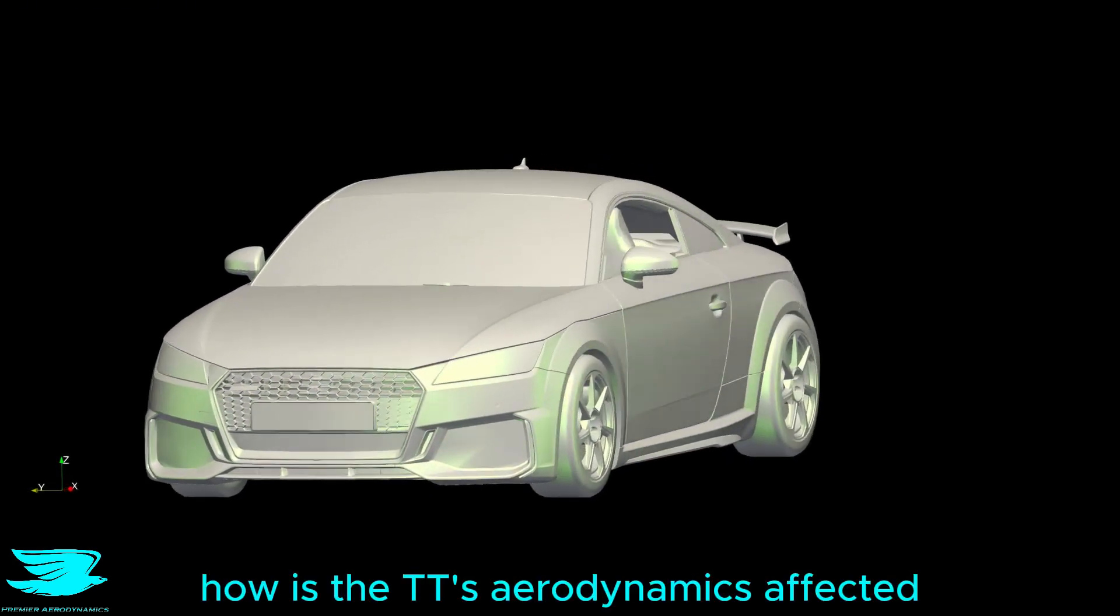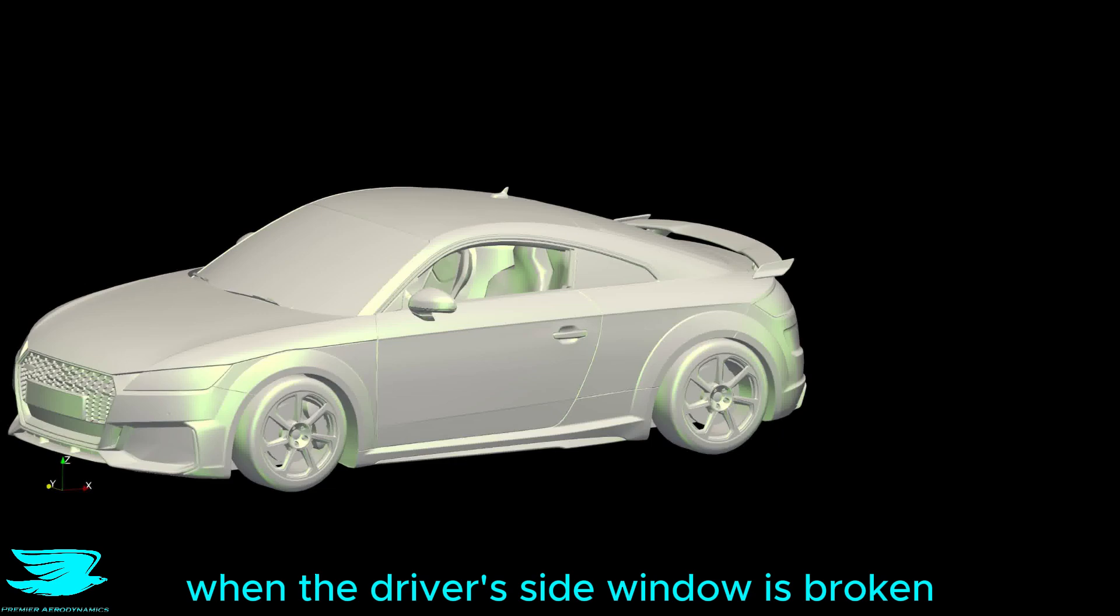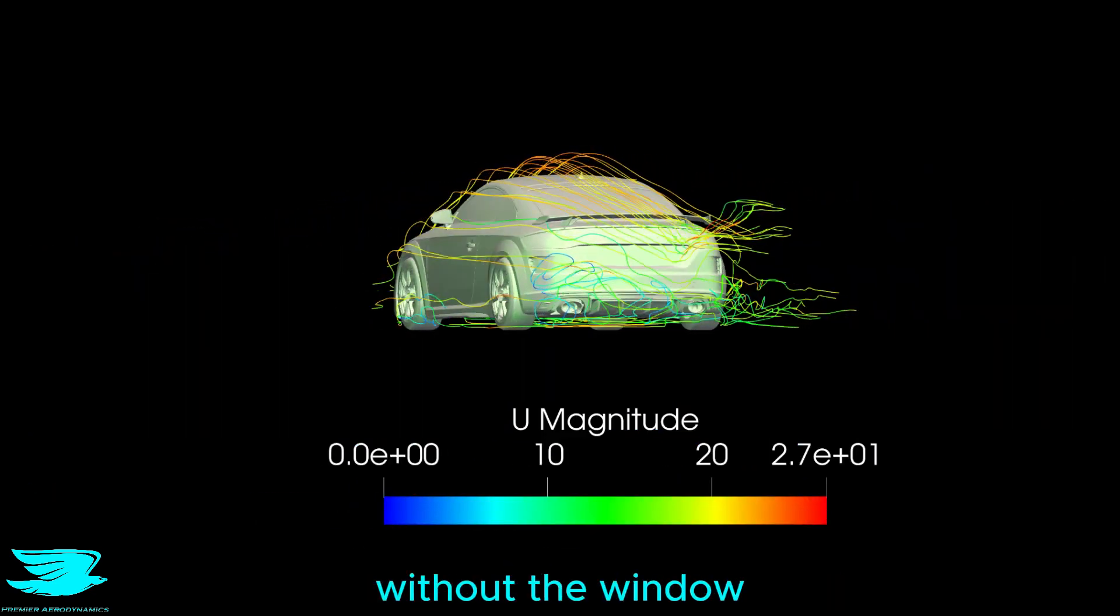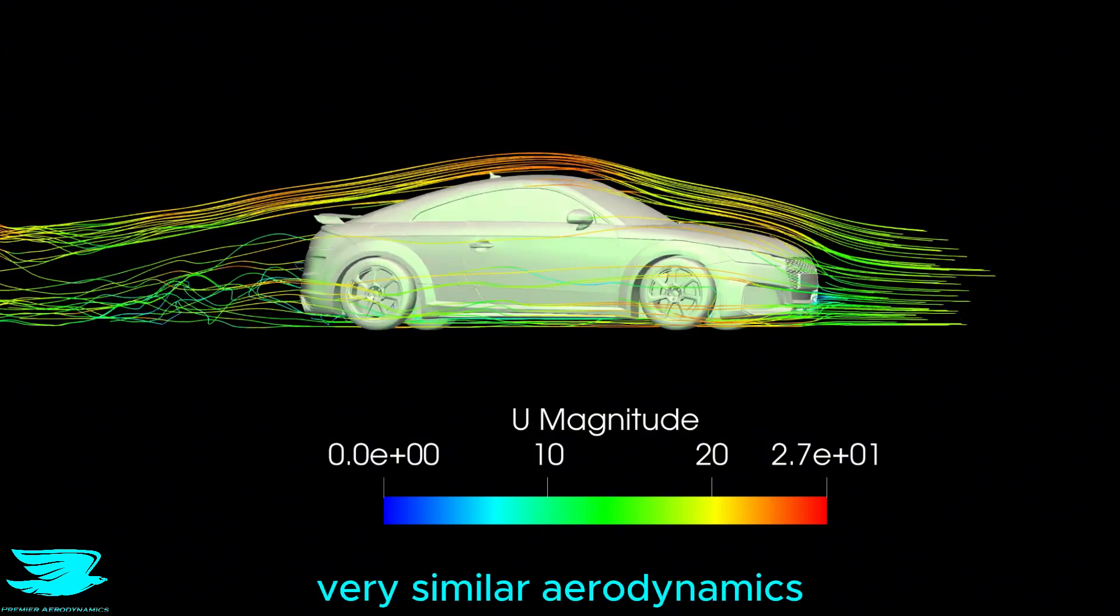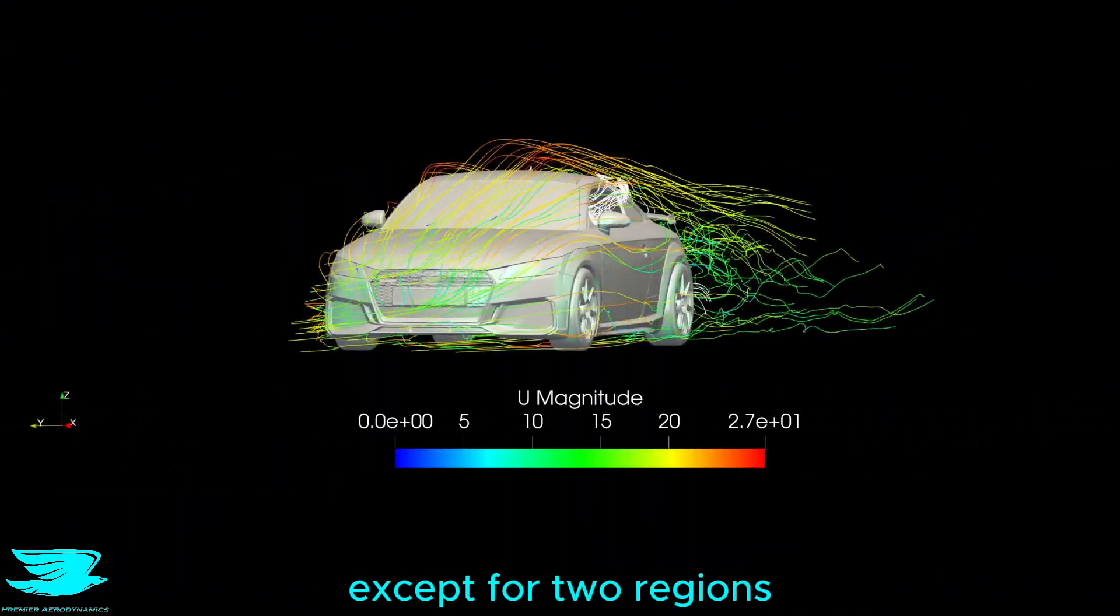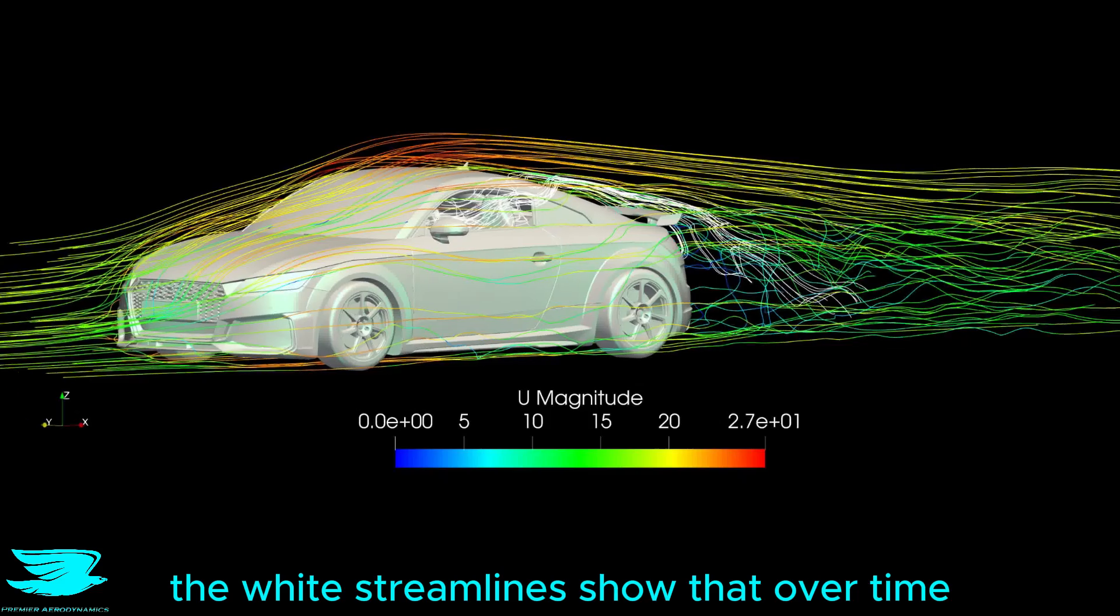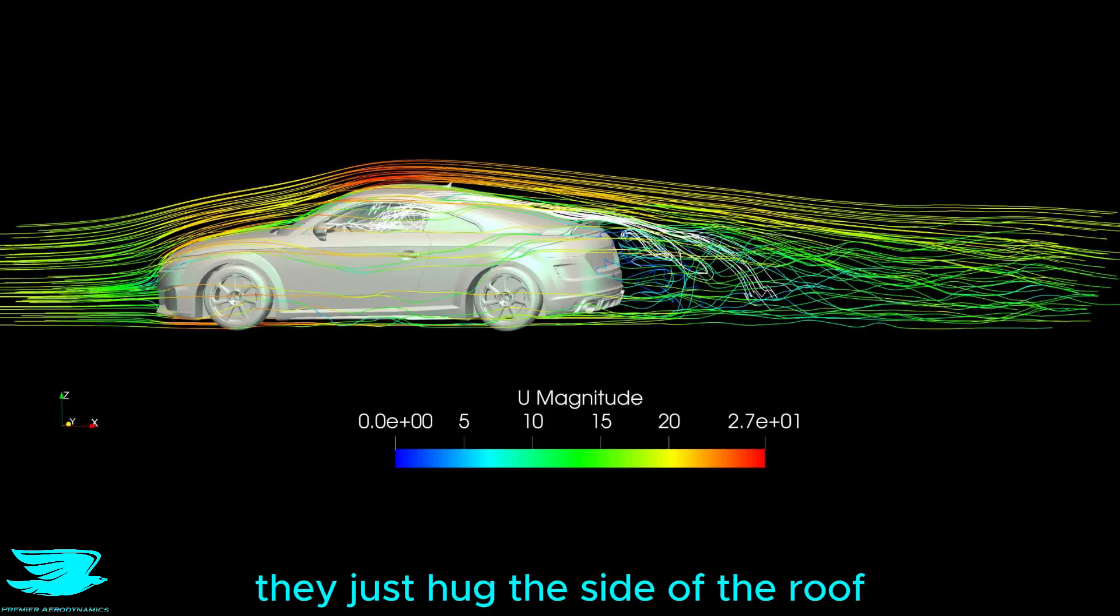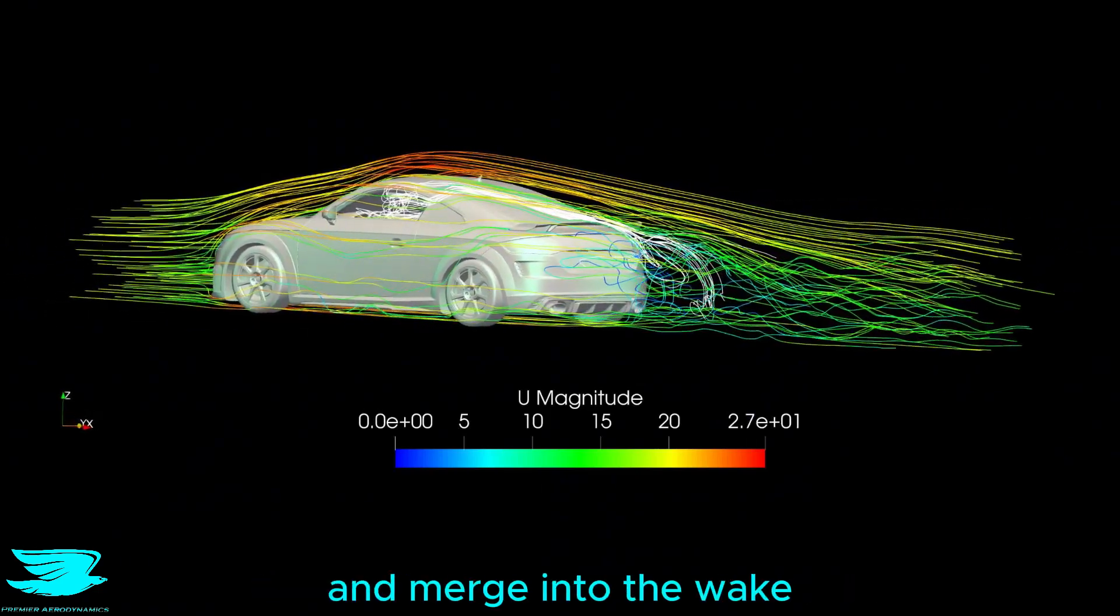How is the TT's aerodynamics affected when the driver's side window is broken? Let's find out now. Comparing the general streamlines without the window. The TT seems to have very similar aerodynamics, except for two regions. The white streamlines show that over time, air is sucked out of the window, but surprisingly, they don't alter the flow too much. They just hug the side of the roof and merge into the wake.